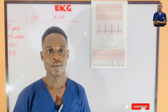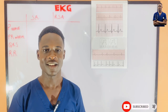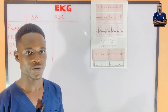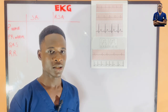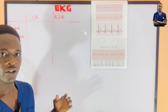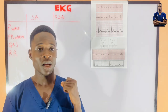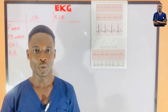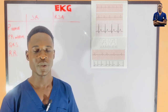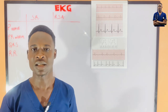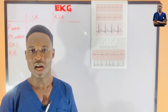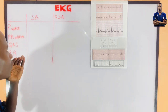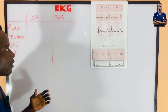Hello guys, welcome back to the Electric Desk. Today we are going to talk about sinus rhythm and respiratory sinus arrhythmia. Starting with sinus rhythm: sinus rhythm is a normal rhythm of the heart which is generated by the SA node, the natural pacemaker, and is characterized by a heart rate of 60 to 100 beats per minute.